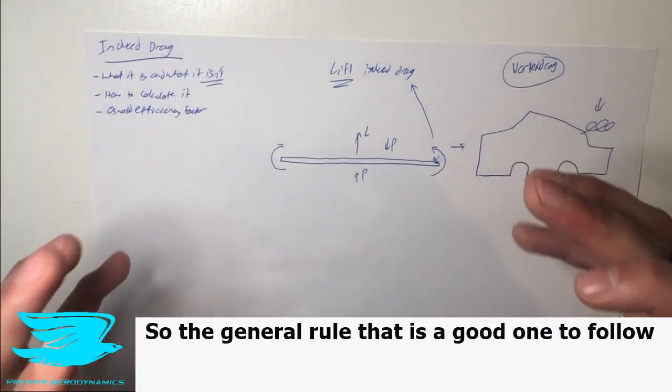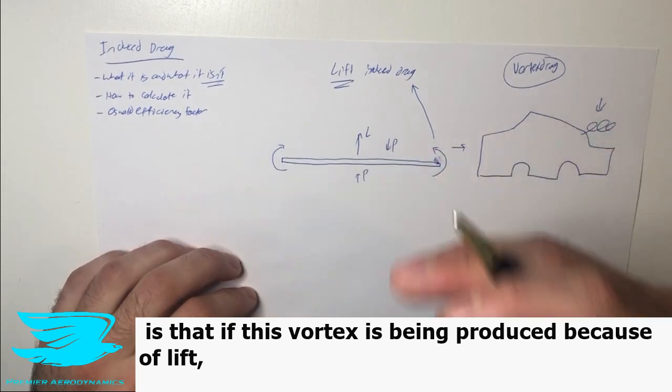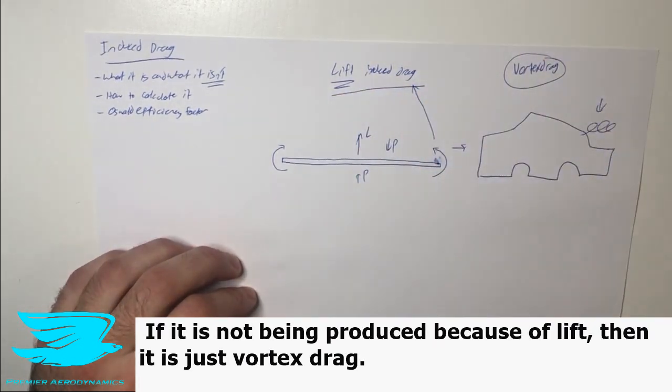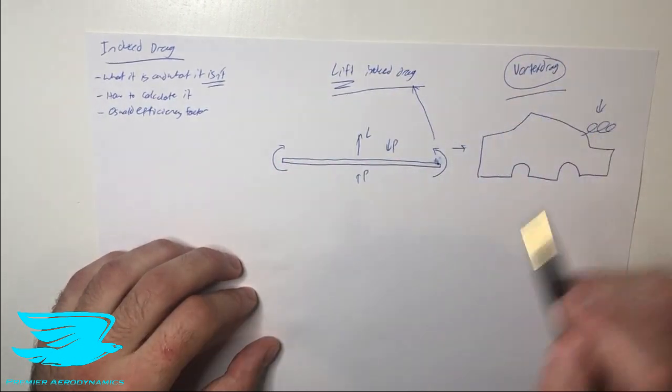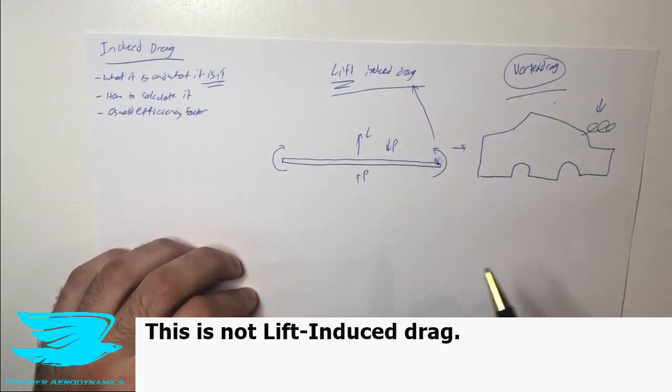So the general rule that is a good one to follow is that if this vortex is being produced because of lift that's being produced, then it is lift induced drag. If it is not being produced because of lift, then it is just vortex drag. So that is what it is and what it isn't. This is lift induced drag. This is not lift induced drag.